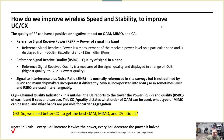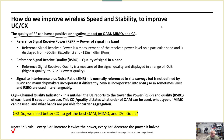Now that we have QAM, MIMO, and carrier aggregation equated to freeways, cars, people, and lanes — how do we increase stability to improve UC and CX? The quality of RF can have a negative or positive impact on QAM, MIMO, and carrier aggregation. More simply: RF quality affects how many people we can put in the car, how many lanes we can use, and how many freeways we can bring up.